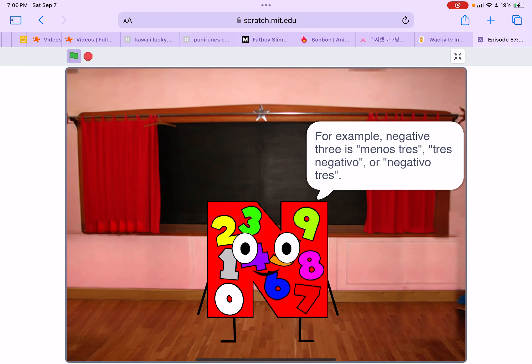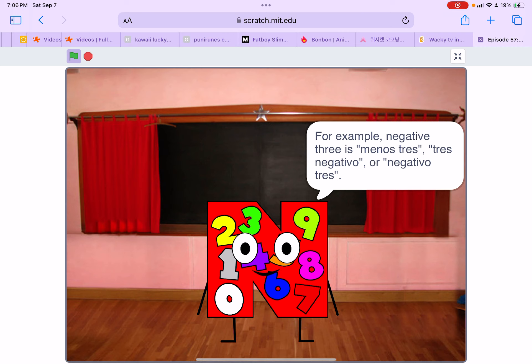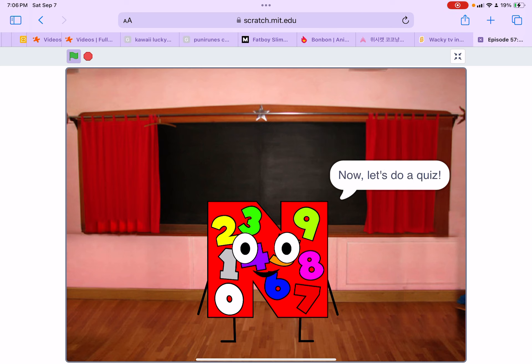For example, negative 3 is menos tres, tres negativo, or negativo tres. Now let's do a quiz.